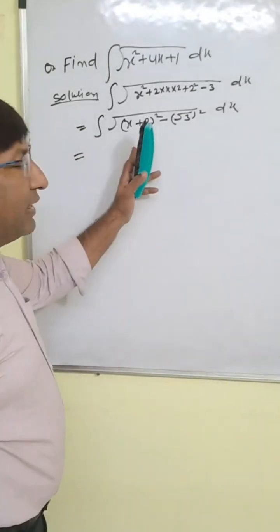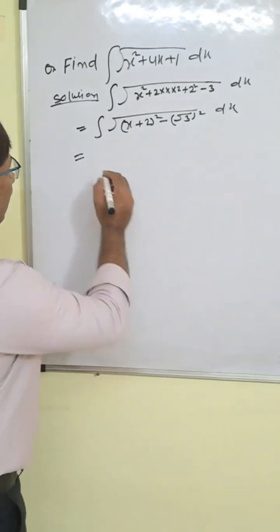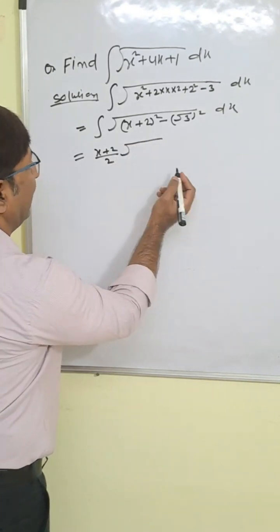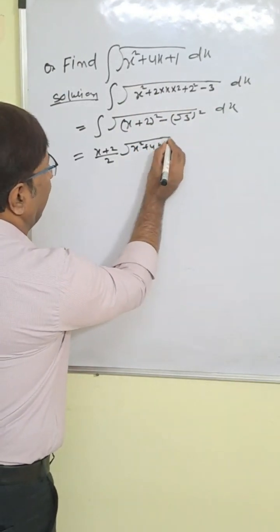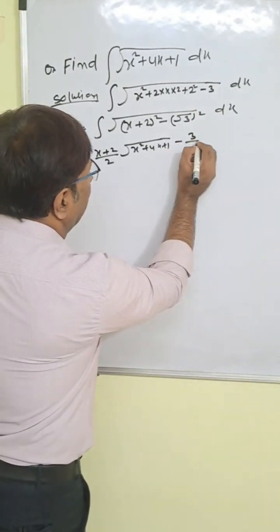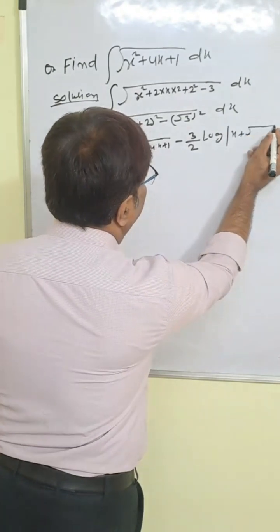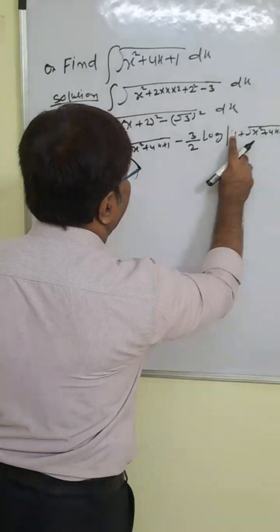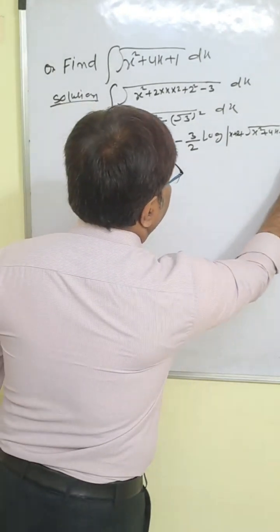Now this fits the formula for integration of root under x square minus a square. The formula is: x by 2 times root under x square minus a square. Here x is replaced by x plus 2. So we write x plus 2 by 2 times root under x square plus 4x plus 1, then minus a square by 2, where a square is 3, so that is 3 by 2. And then log of (x plus 2) plus root under x square plus 4x plus 1, plus C. This is our correct answer.